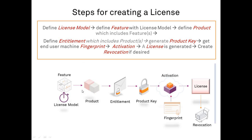These three things — the license model, the feature, and the product — all need to be prepared ahead of time. They need to be prepared by product management, who decide which license models, which features, and which products are needed. These need to stay ready for any customer who wants to buy.